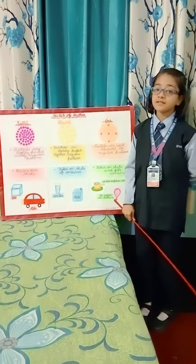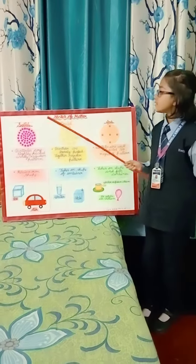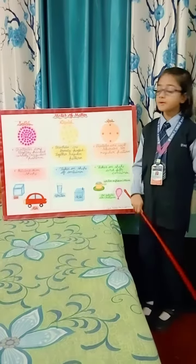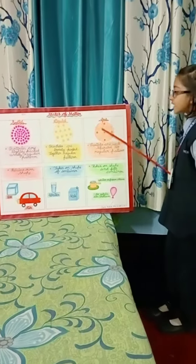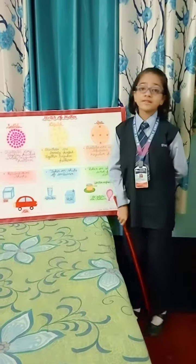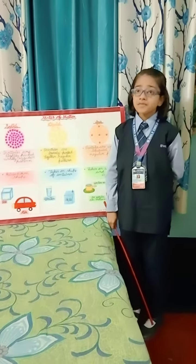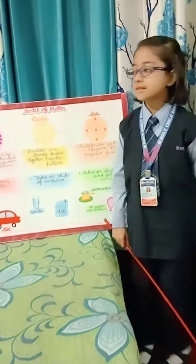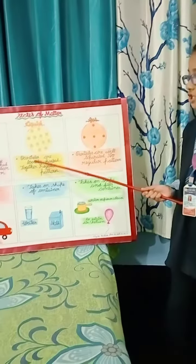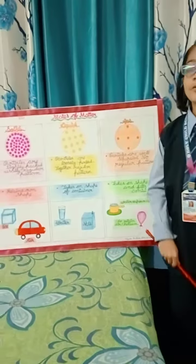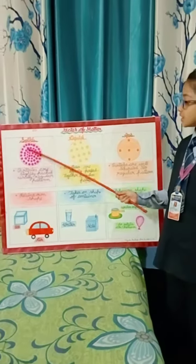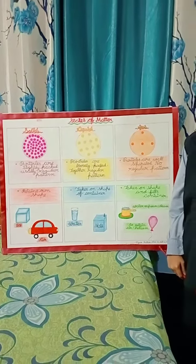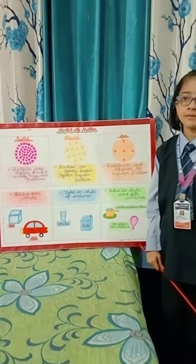The fact that decides whether the state of matter is going to be a solid, liquid or gas is the arrangement of molecules in a substance. Here is a chart. Number 1: Solid. Solids have a definite shape and occupy a definite space.